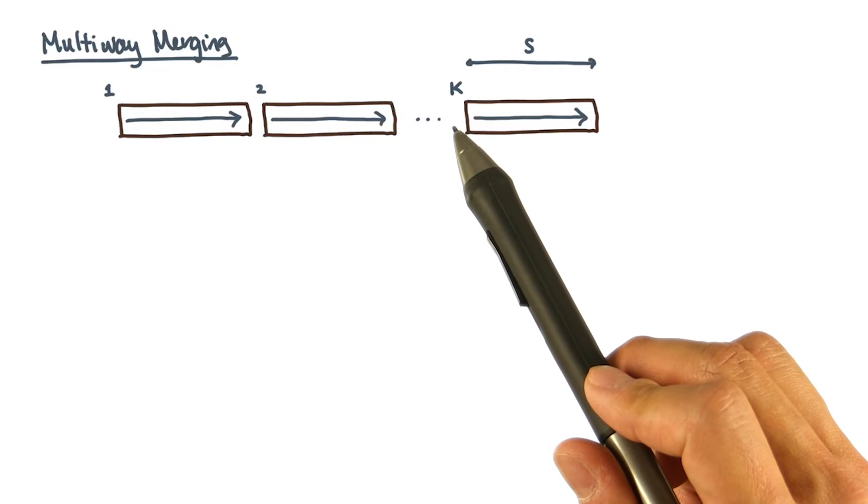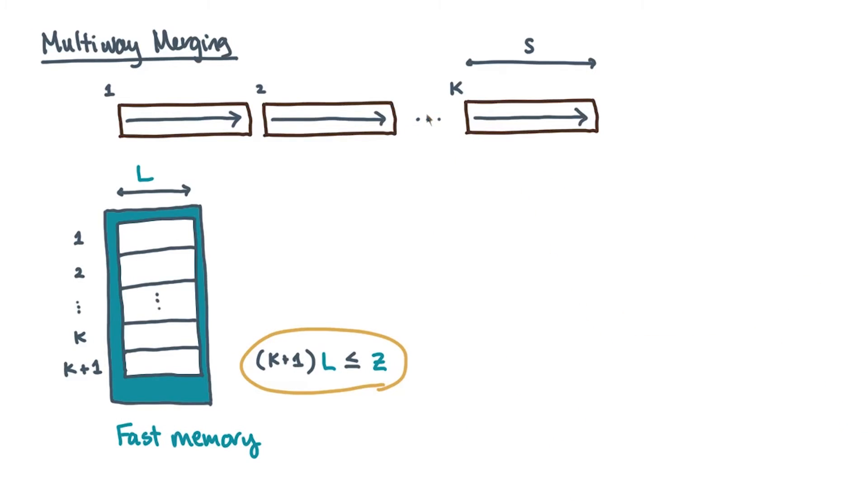Your choice of K is not arbitrary. Let's say you've chosen it so that K plus one L-sized blocks will fit in fast memory. This way, you can reserve one block for each of the inputs, as well as an additional block for the output.